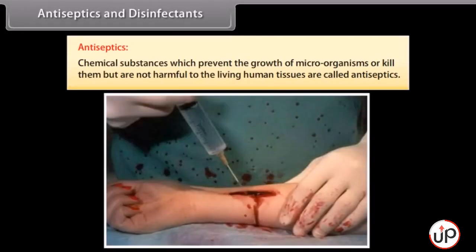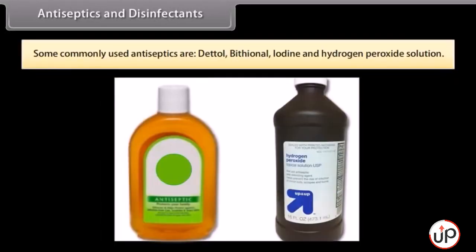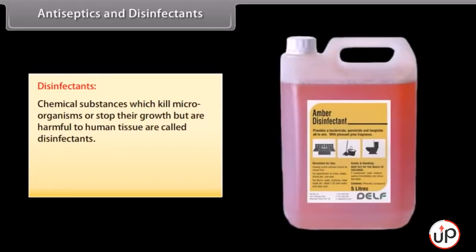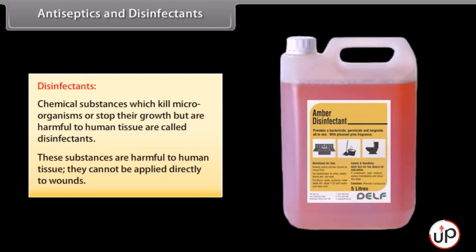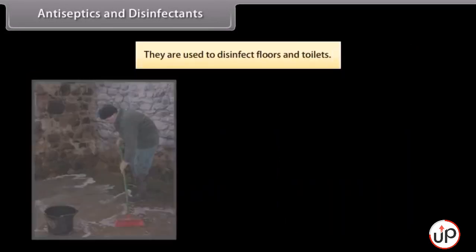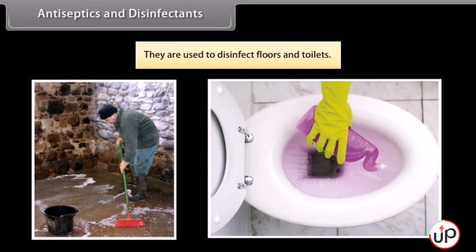Antiseptics and disinfectants. Antiseptics: chemical substances which prevent the growth of microorganisms or kill them, but are not harmful to living human tissues, are called antiseptics. They are applied to living tissues — to wounds, ulcers and diseased skin surfaces. Some commonly used antiseptics are Dettol, bithionol, iodine and hydrogen peroxide solution. Disinfectants: chemical substances which kill microorganisms or stop their growth, but are harmful to human tissues, are called disinfectants. They cannot be applied directly to wounds and are used to disinfect floors and toilets — for example, phenol, sulfur dioxide and chlorine.